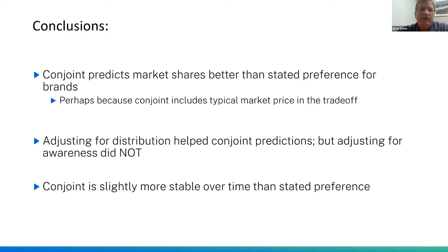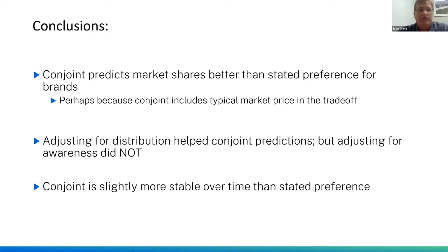Their conclusions were that conjoint predicts market shares better than just the stated preference question for brands. In conjoint, people are asked which brand they'd prefer at a specific price, rather than just aspirationally stating a brand they may not be able to afford. That's why the conjoint predictions from monthly waves did a better job predicting their POS market share panel data than stated preference for brands.